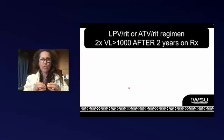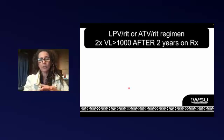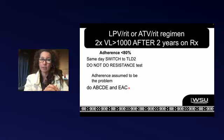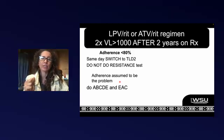When do we get worried? The group requiring deeper assessment: patients on lopinavir/ritonavir or atazanavir/ritonavir as second-line, on treatment for longer than two years, with two viral loads over 1000. What makes the decision on whether to switch depends on their adherence. If they have poor adherence — not always picking up on time or missing pharmacy appointments — that's probably causing the elevated viral load. We're not going to do a resistance test in these patients; we'll address adherence, and the easiest way is to switch them to TLD2.